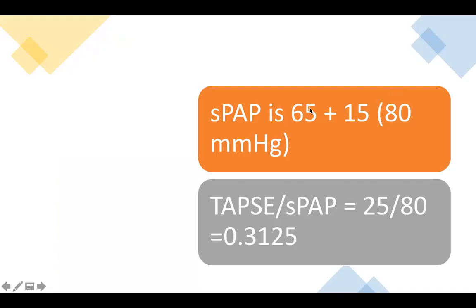There is another important sign. When we divide the systolic pulmonary artery pressure — obtained from the tricuspid regurgitant gradient of 65 plus 15 for the dilated incompressible IVC — we get a systolic pulmonary artery pressure of 80 mmHg. Dividing the TAPSE by the systolic pulmonary artery pressure gives an idea of RV-pulmonary artery coupling, which is 0.3125.